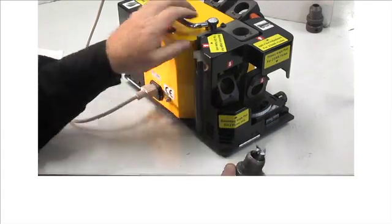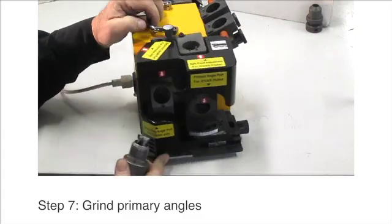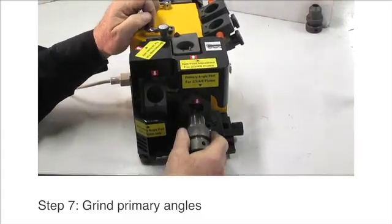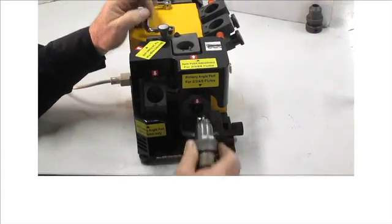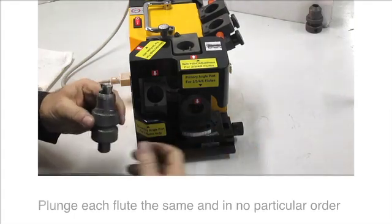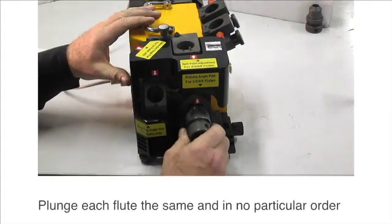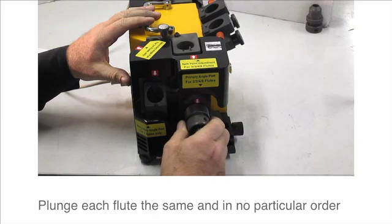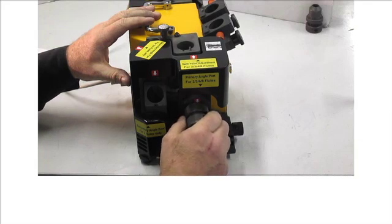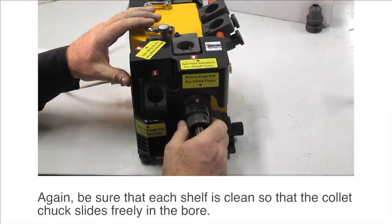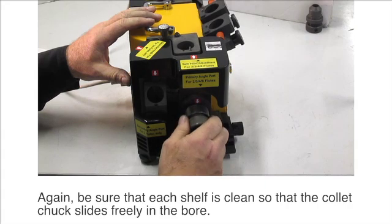So now we're going to do the primary. Primary is done here for all two, three, four and six flute tools. Just goes in this port, once again make sure that's clean without grinding the end of our finger. Just plunge it gently, nice and quiet, just go around each flute exactly the same.